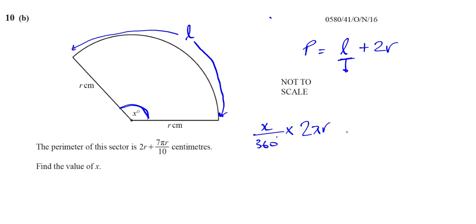That's the length of the arc. We've got to also add 2 times the radius. That gives us the perimeter of the sector which is 2r plus 7πr over 10.